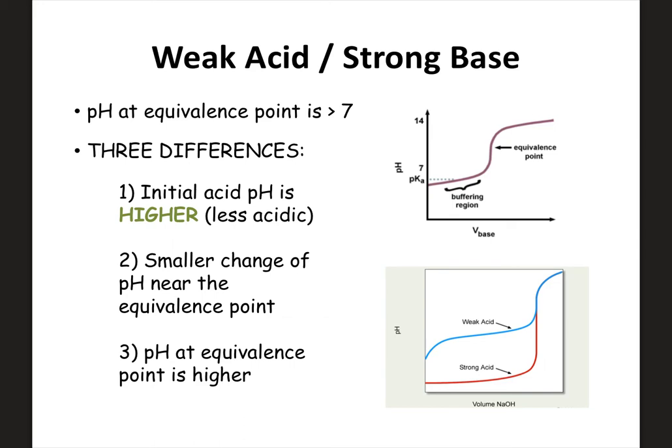The first thing to notice is that the pH at the equivalence point of a weak-strong is not going to be at 7. If you have a strong-strong titration, the pH at the equivalence point is 7. But here, in this example, if we're doing a weak acid being titrated with a strong base — the weak acid is in the flask, it's our analyte — for weak-strong, the weak one is the analyte and the titrant will be the strong.